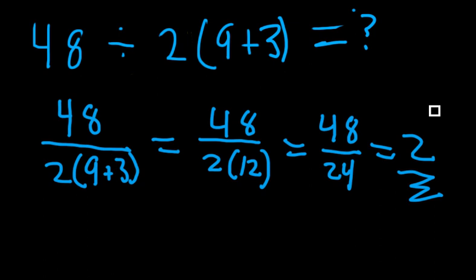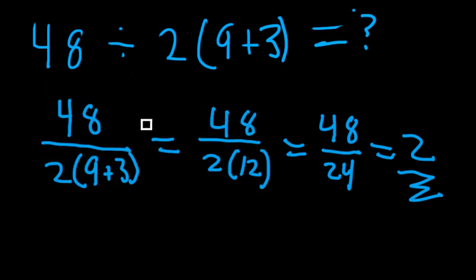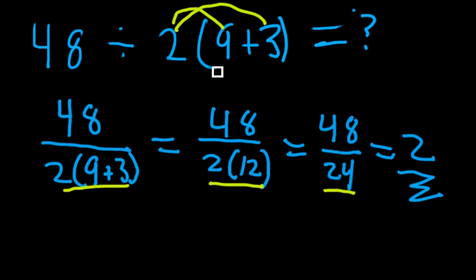Alright, we have found the answer — and no, we have not. The problem with this is in the first step, basically. Most people would distribute out the 2, which happens right down here, and come to 24, or 48 divided by 24. This is incorrect according to the order of operations.